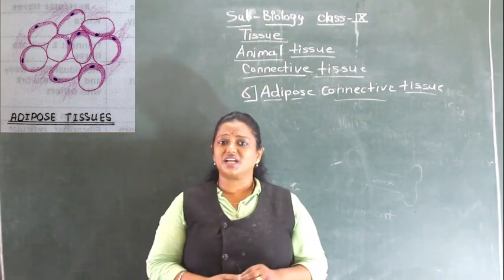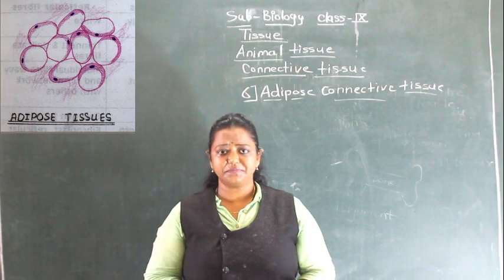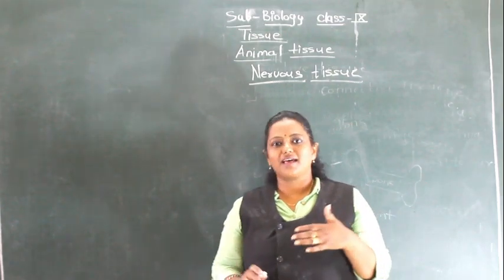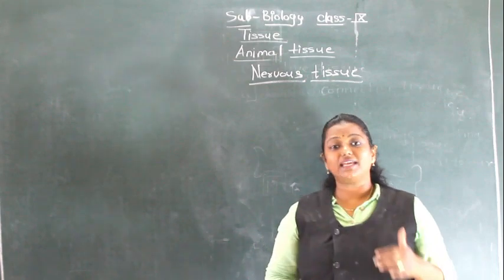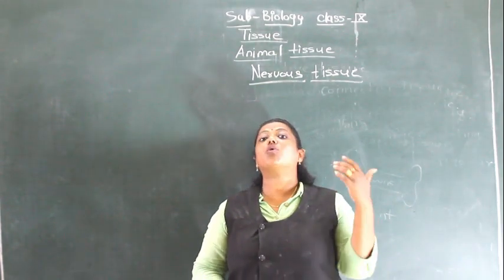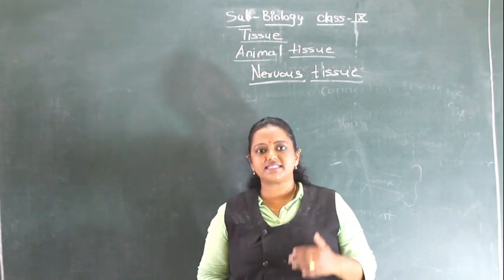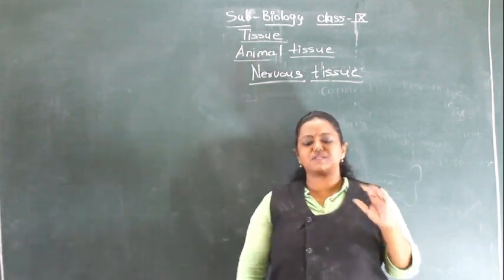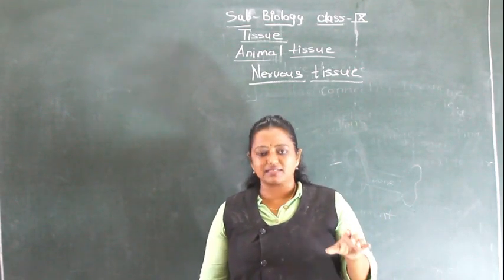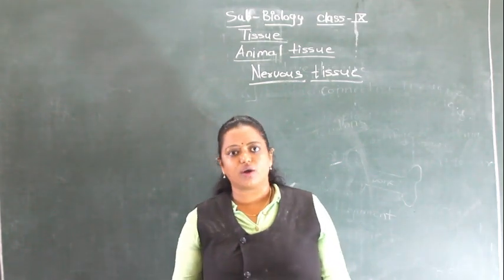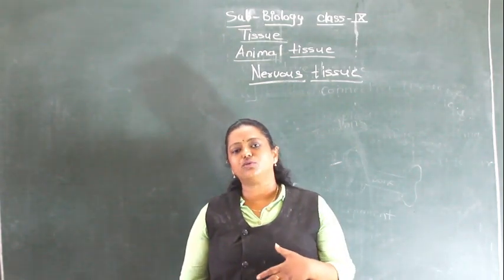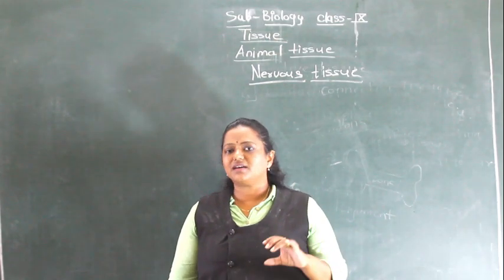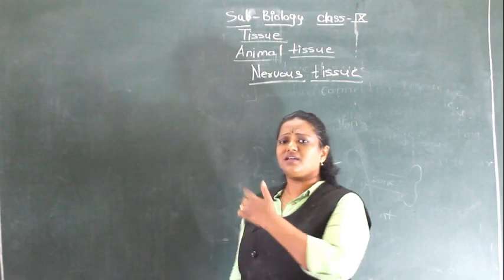We have concluded with connective tissues and seen all types. Now we will go for the last animal tissue — nervous tissue. After it, there are no more tissues. The nervous tissue plays a very important role in the control and coordination of our body. Related to this tissue there will be a specific chapter next year called 'Control and Coordination.' Here I shall introduce you to nervous tissue.